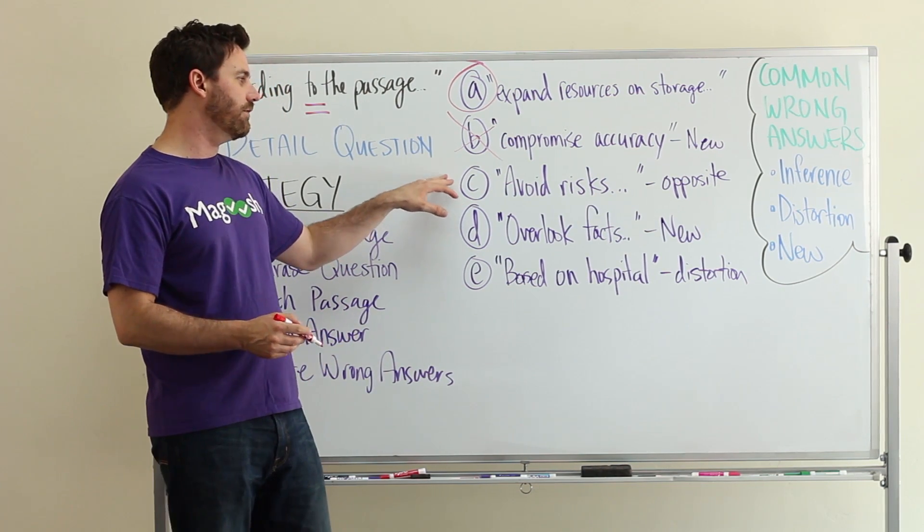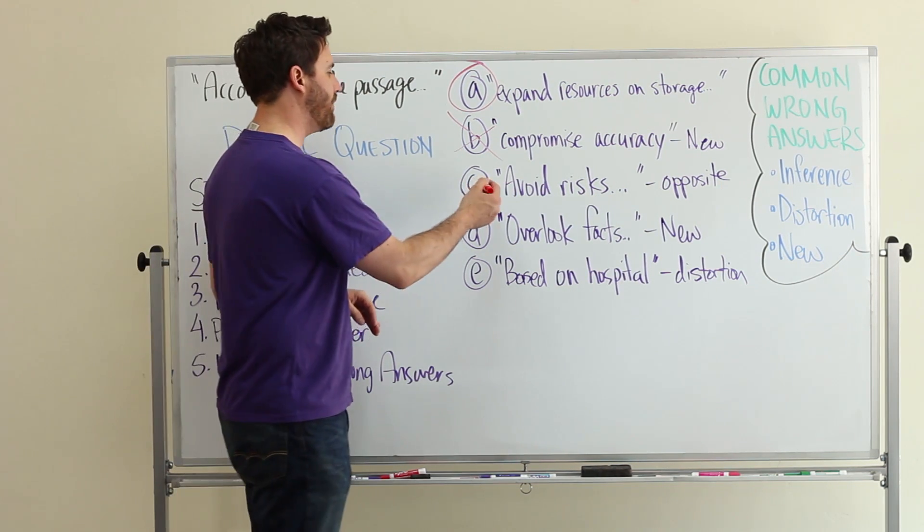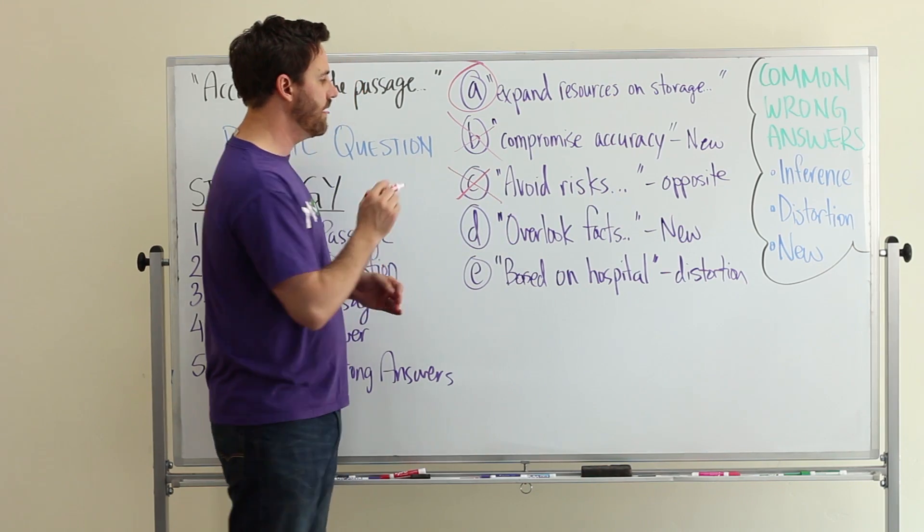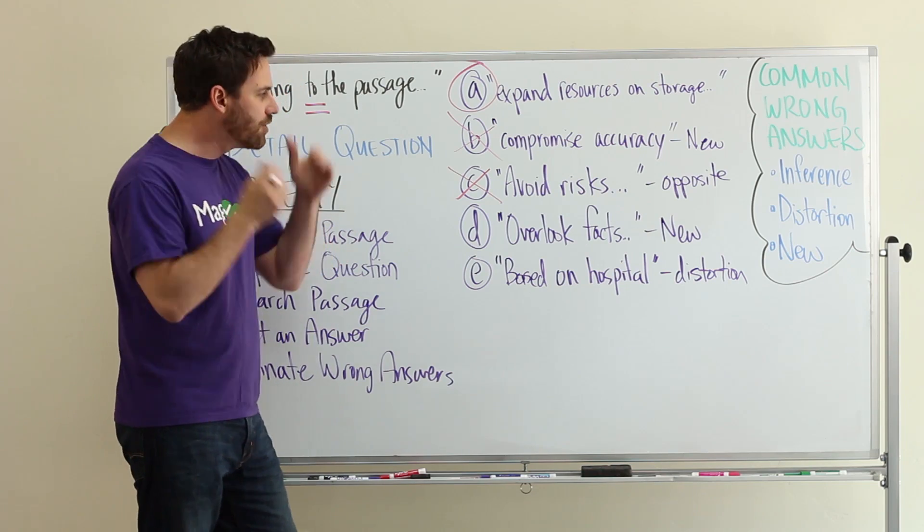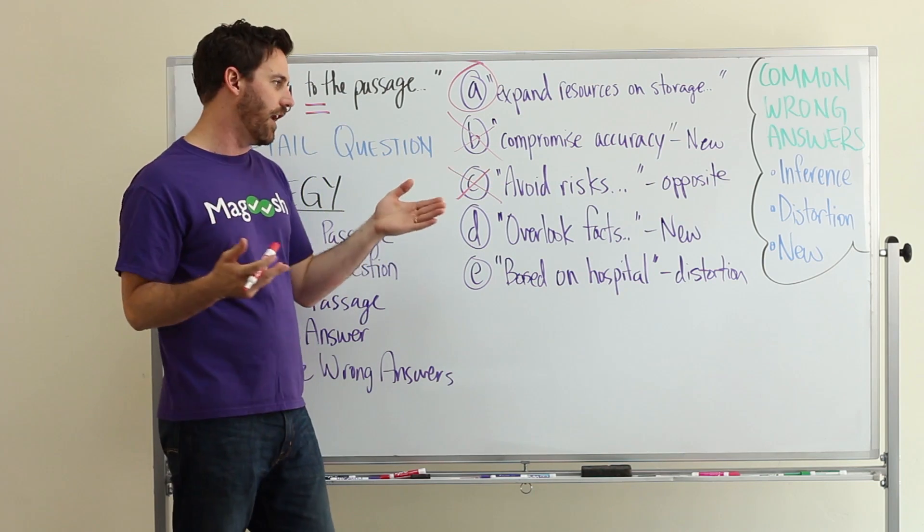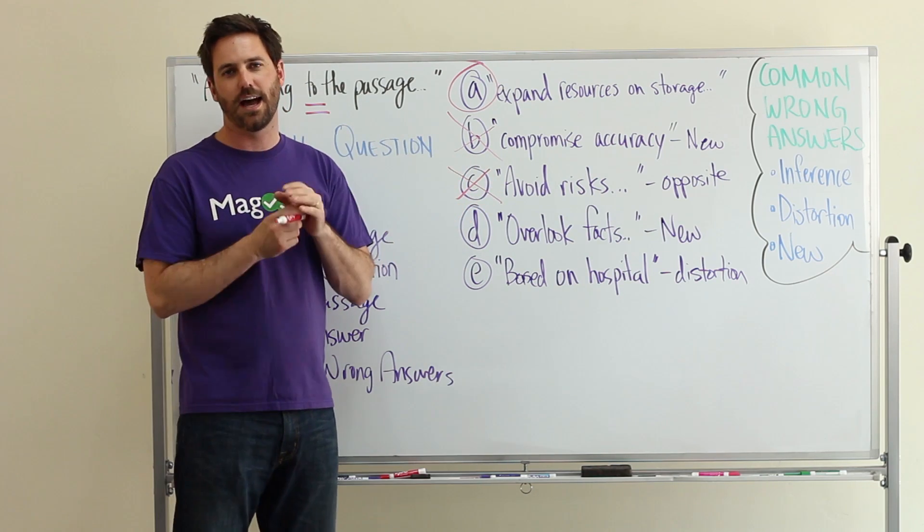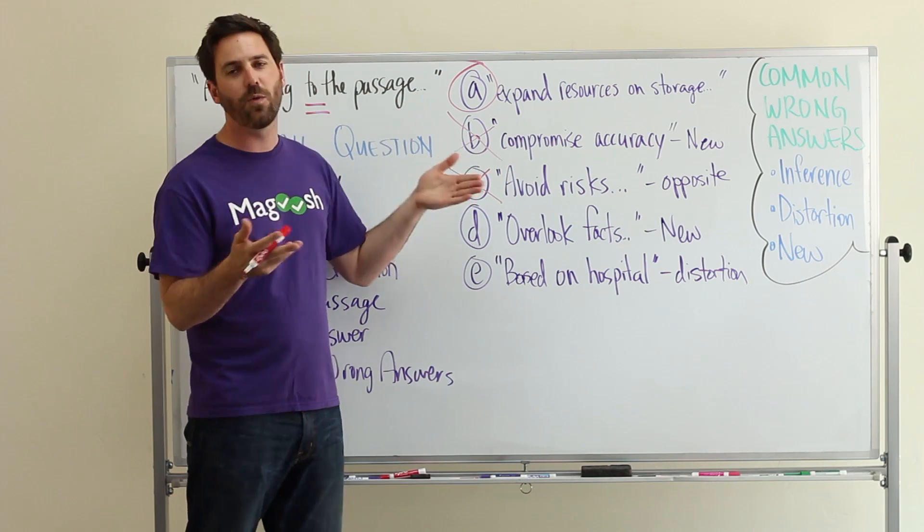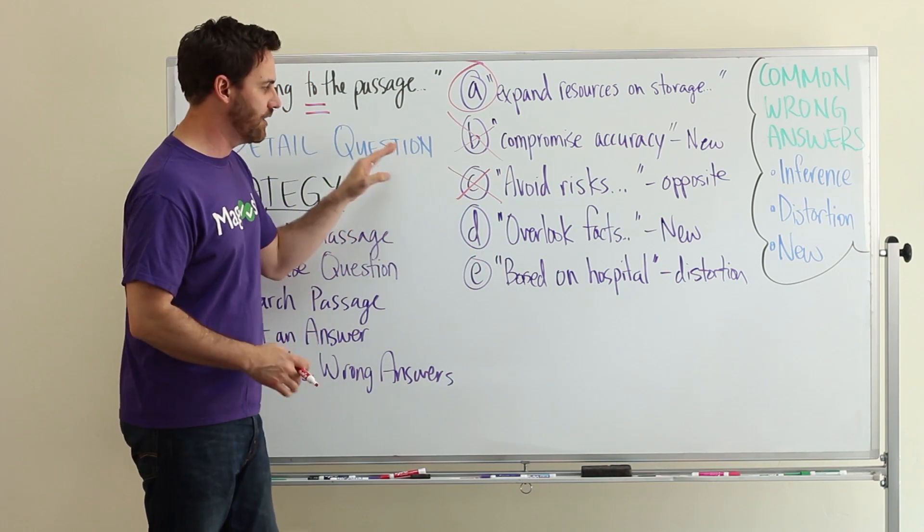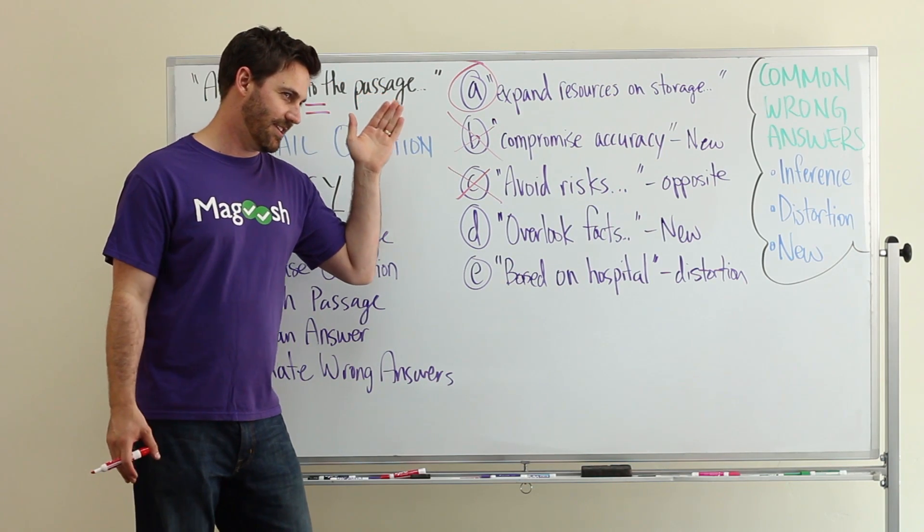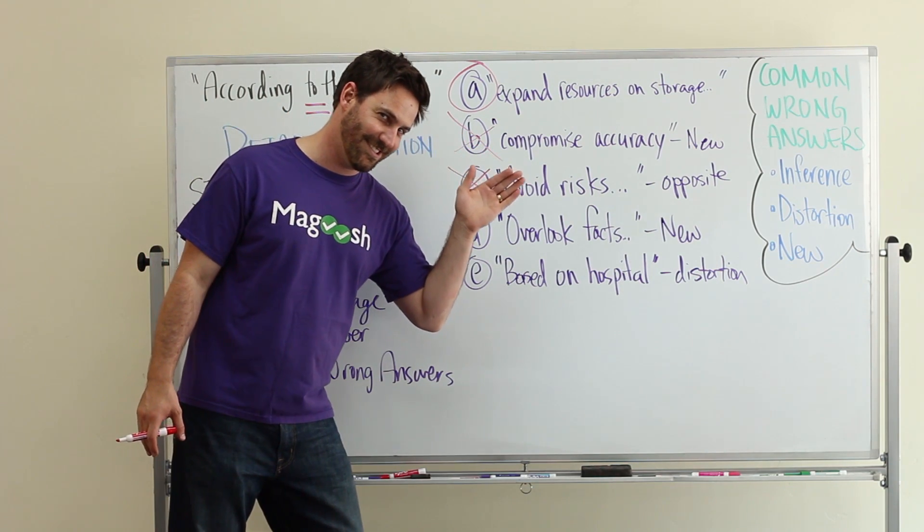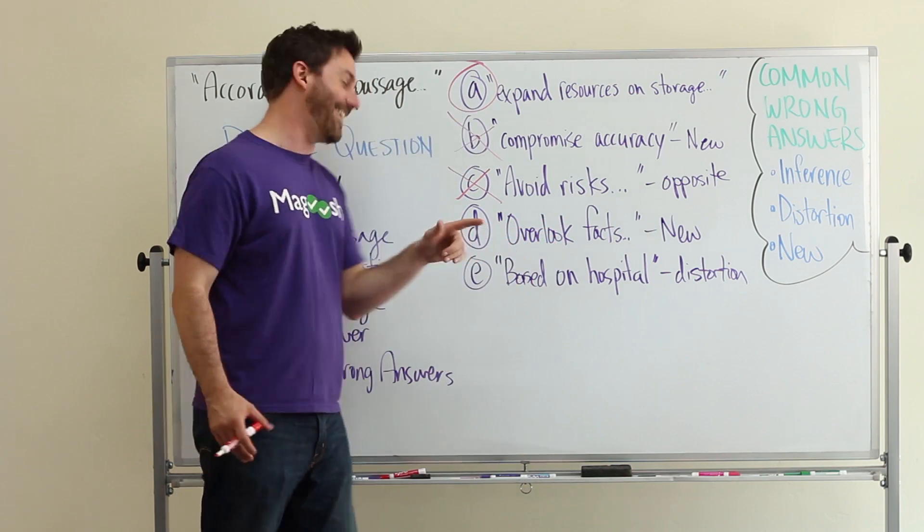C is a tricky one. This might catch you. They talk about avoiding risks, but this is actually the opposite of what is said in the first paragraph. There's going to be risks in the ways that they collect data now. There's no way to avoid some risks, so this is the opposite.